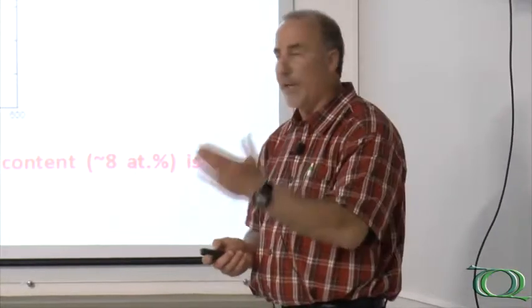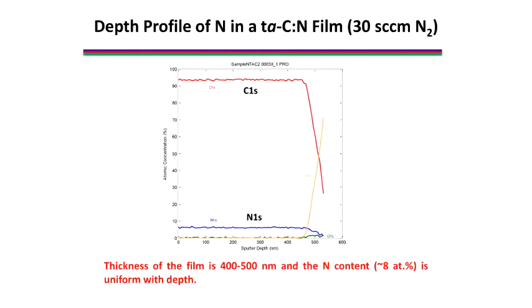How does the nitrogen look with depth? This is a depth profile looking at carbon 1S signal, the nitrogen 1S signal, as we sputter into the material. Here is the carbon signal. We get into the material about 450 nanometers, the thickness, then the carbon signal goes down. The silicon signal from the substrate increases, and you can see the nitrogen signal is very uniform with depth. The XPS gave us information down here at the surface, but this depth profile tells us the nitrogen is distributed uniformly with depth in the material at about eight atomic percent through there.